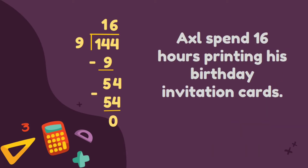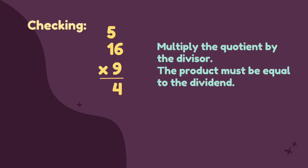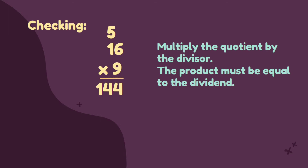Therefore, 16 is the answer. Axel spent 16 hours printing his birthday invitation cards. To check if our answer is correct, we need to multiply the quotient by the divisor. The product must be equal to the dividend. 9 times 6 is equal to 54. 9 times 1 is equal to 9, plus 5 is equal to 14. The answer is 144. Therefore, our quotient is correct.